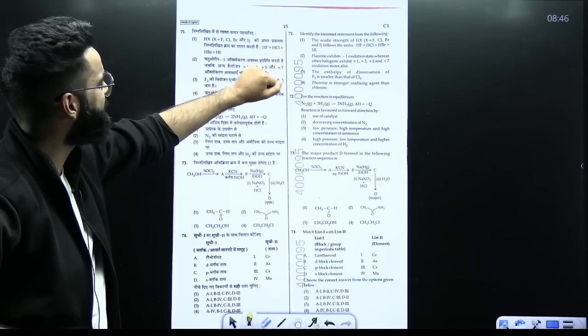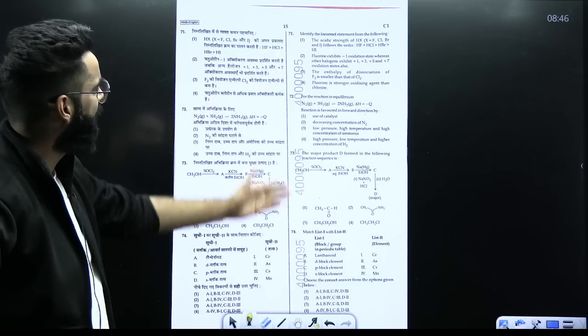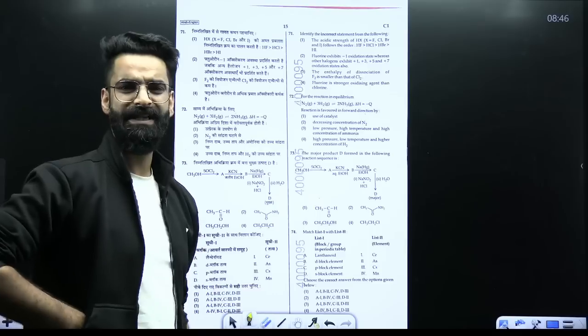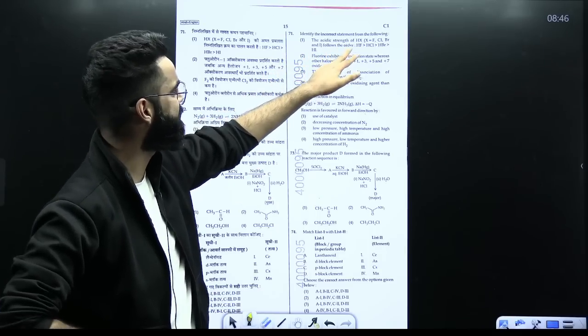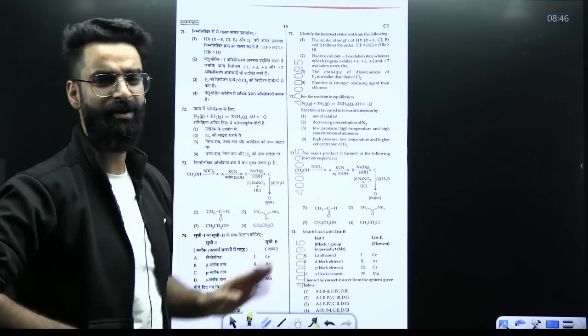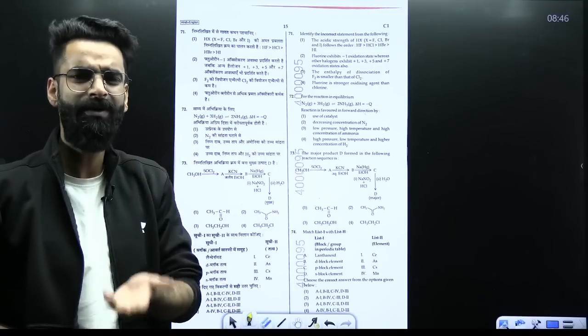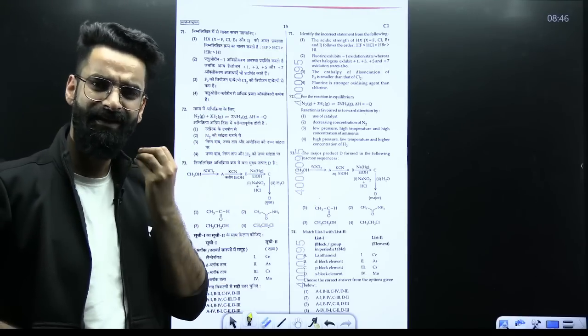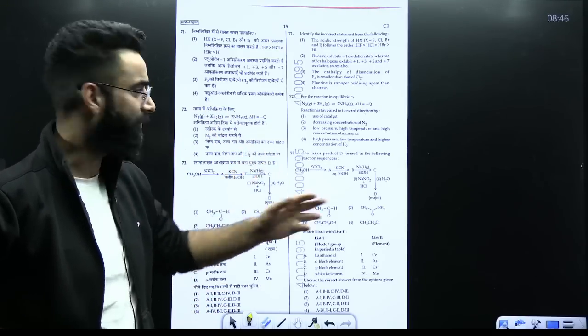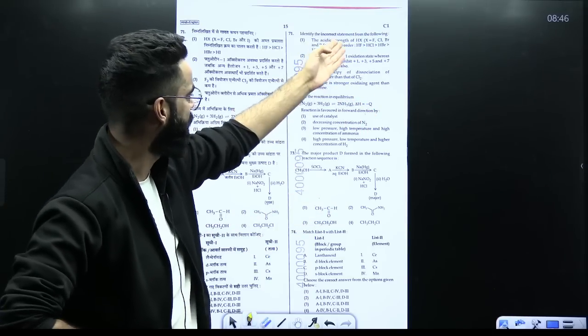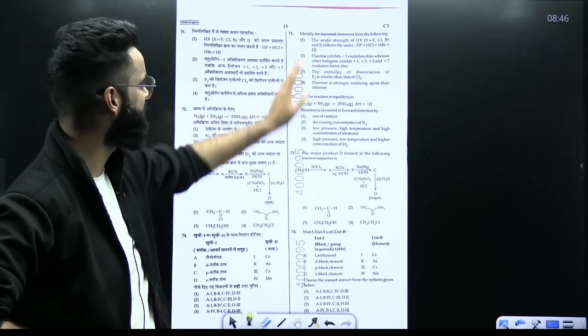Identify the incorrect statement from the following. There are few statements which are given, you have to select the incorrect one. For example, you are given with the acids, HF, HCl, HBr, HI. You have to check their acidic strengths. You know HI is more acidic than all. HI will be more acidic than all. So it will be the first question only, first option only which will be incorrect.